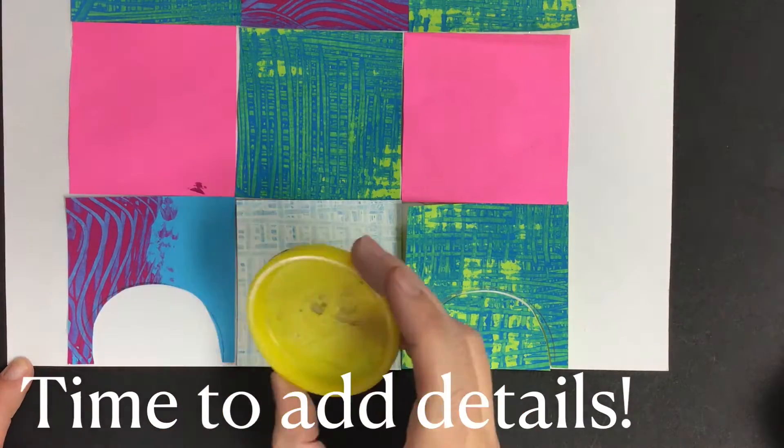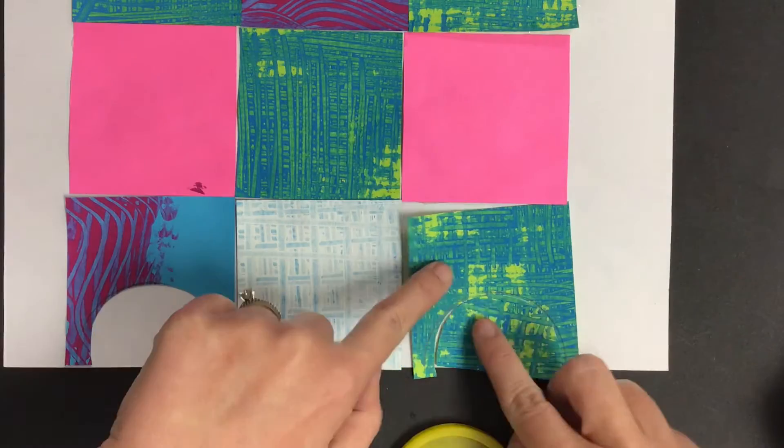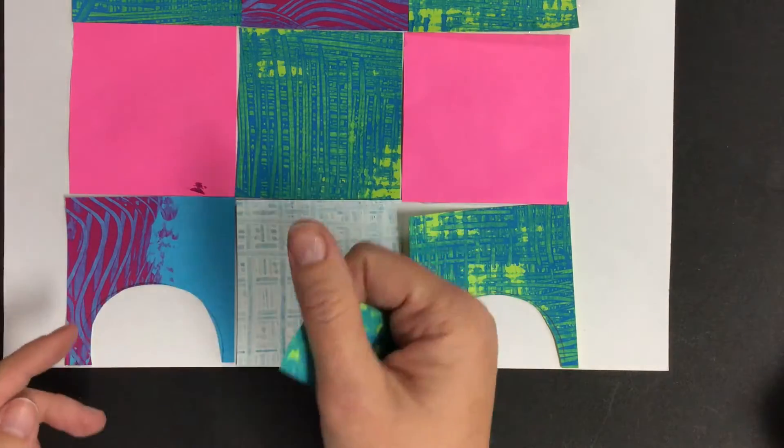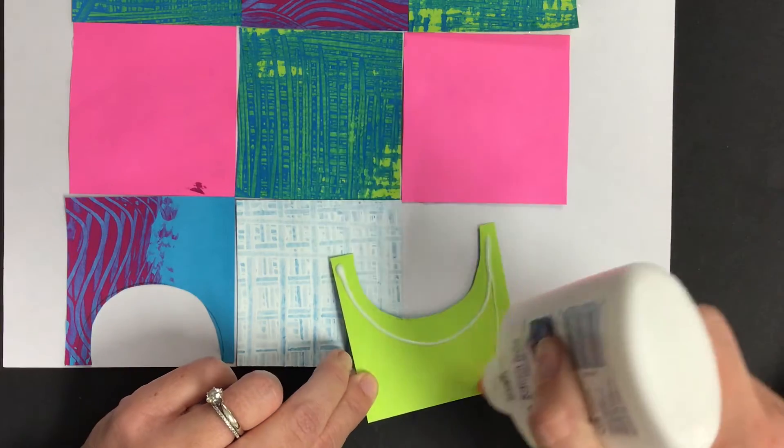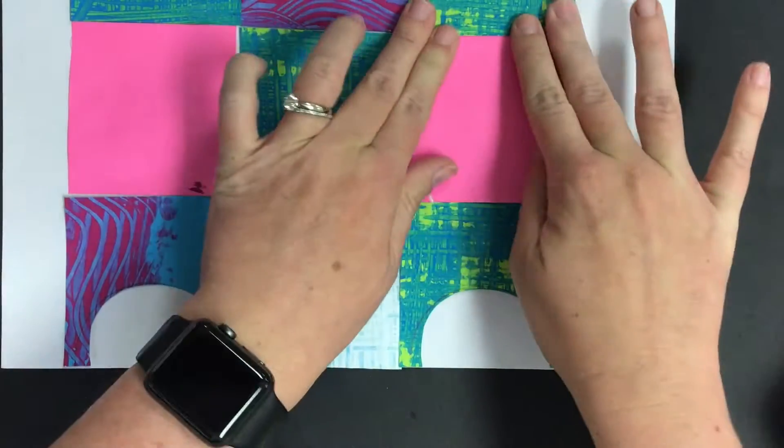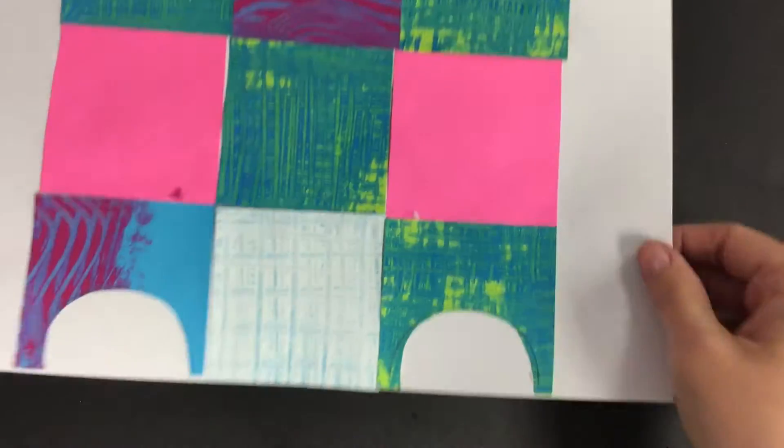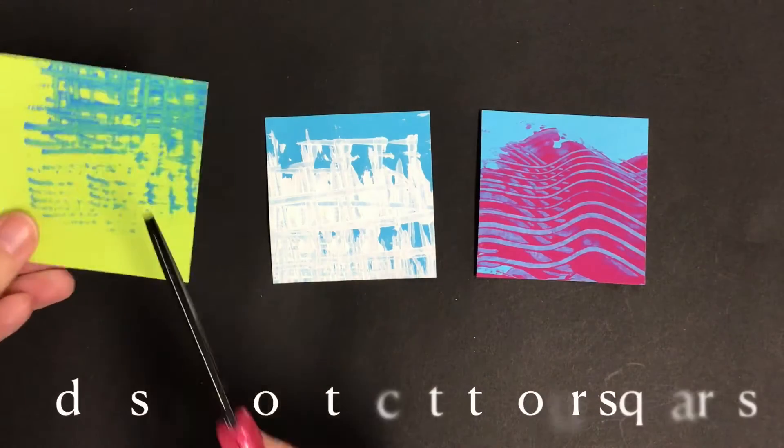Before I glue all of my pieces down, there are two places that I wanted to create a bridge. So I use a circle tracer, cut it out, and I'm going to save that extra paper for another design. Make sure that you still glue every corner and every edge and really press that down. Now that you have your base layer of your castle, let's add some more details.